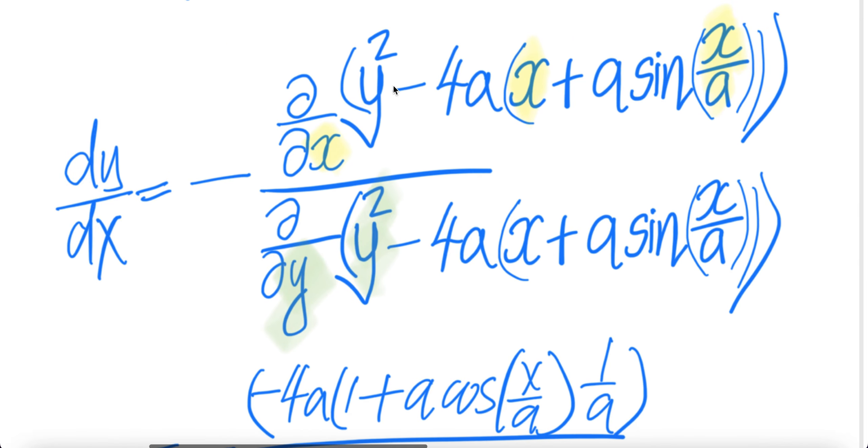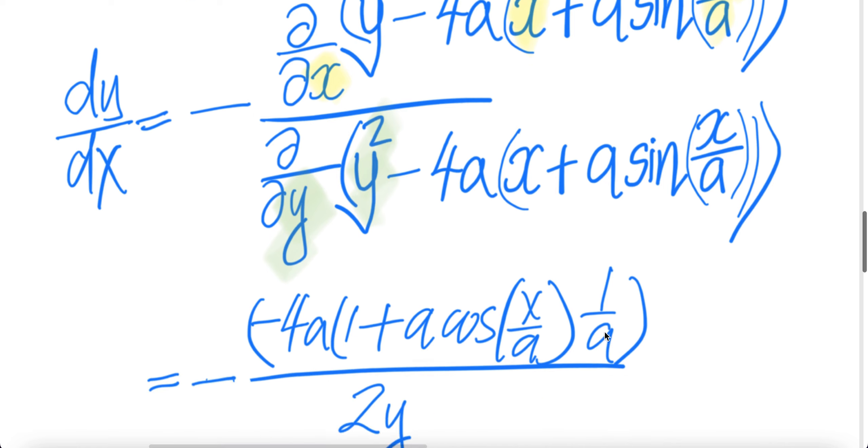For the top piece, the partial with respect to x, the constant is 0 here. Partial of this is minus 4a comes up, with respect to x is 1 here, plus a comes up and the sine will be cos x over a times this one, the partial of this is 1 over a.